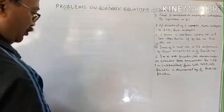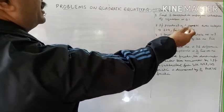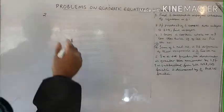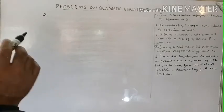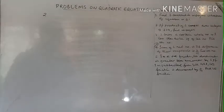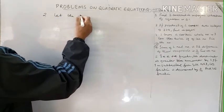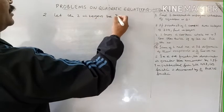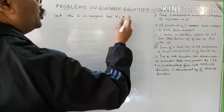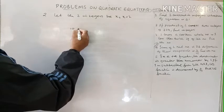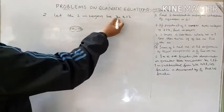Question number two: if the product of two consecutive even integers is 224, find the integers. For consecutive even integers, the difference is 2. So let the two consecutive even integers be x and x plus 2. If x is 10, the next even integer is 12; if x is 12, the next is 14.